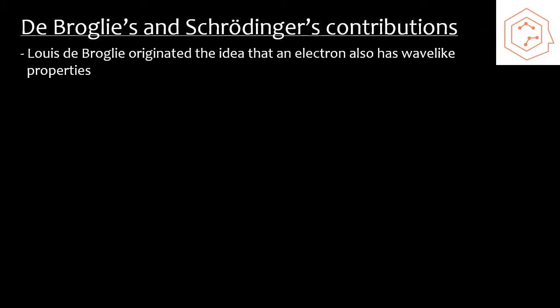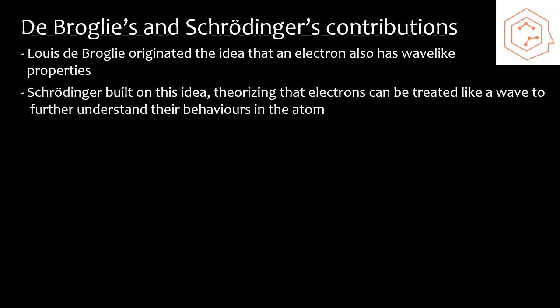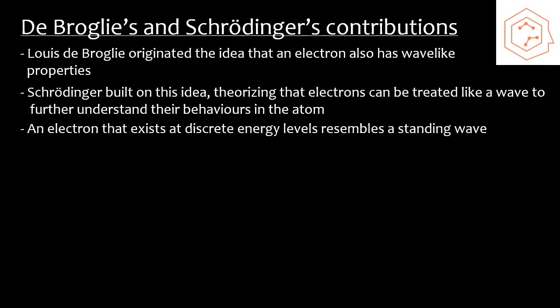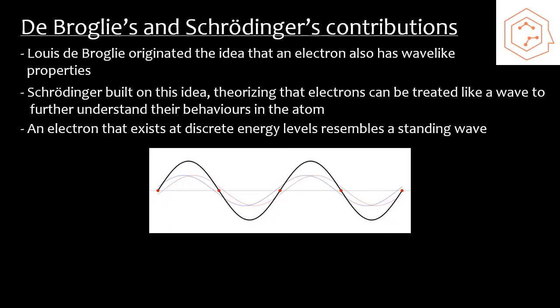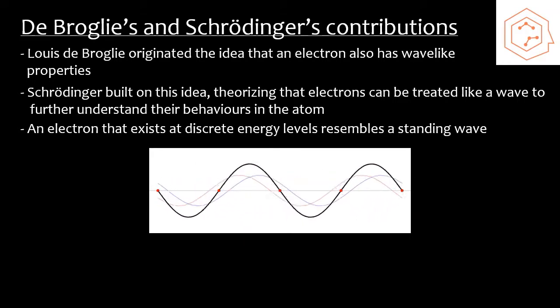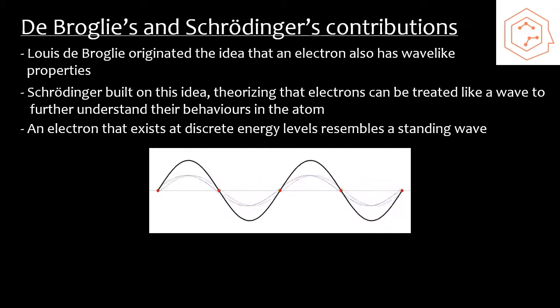After Bohr, the new approach to understanding how atoms behaved is referred to as quantum mechanics or wave mechanics. French physicist Louis de Broglie originated the idea that electrons, which have classically been viewed as a particle, also have wave-like properties. Then Erwin Schrödinger, an Austrian physicist, built on this idea and instead focused on the wave-like properties of electrons in order to help us better understand the atom's behavior. Schrödinger stated that an electron at these energy levels resembled a standing wave, which is a wave that's fixed at both ends such as shown in this gif here, and it seems to be stationary.